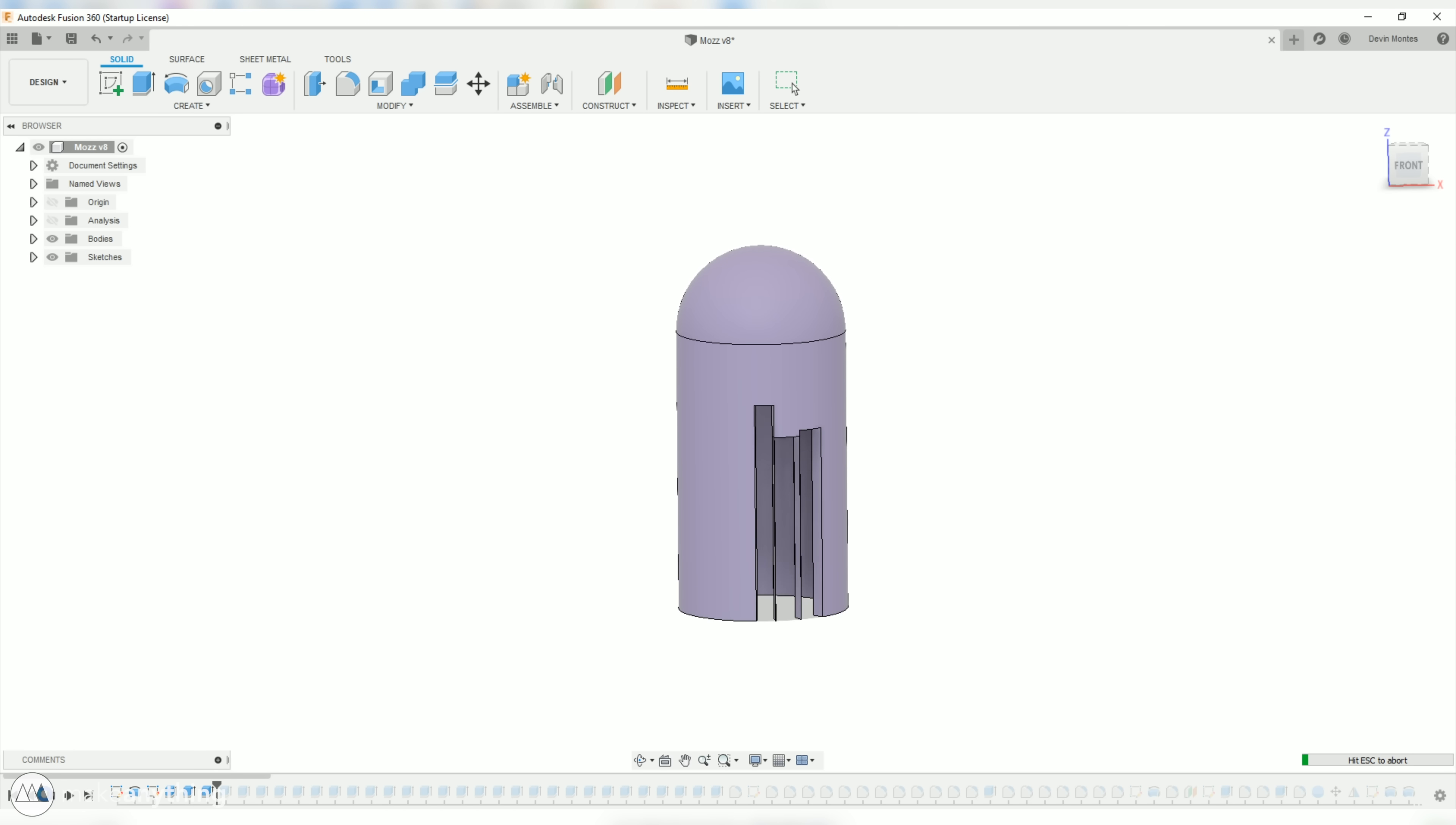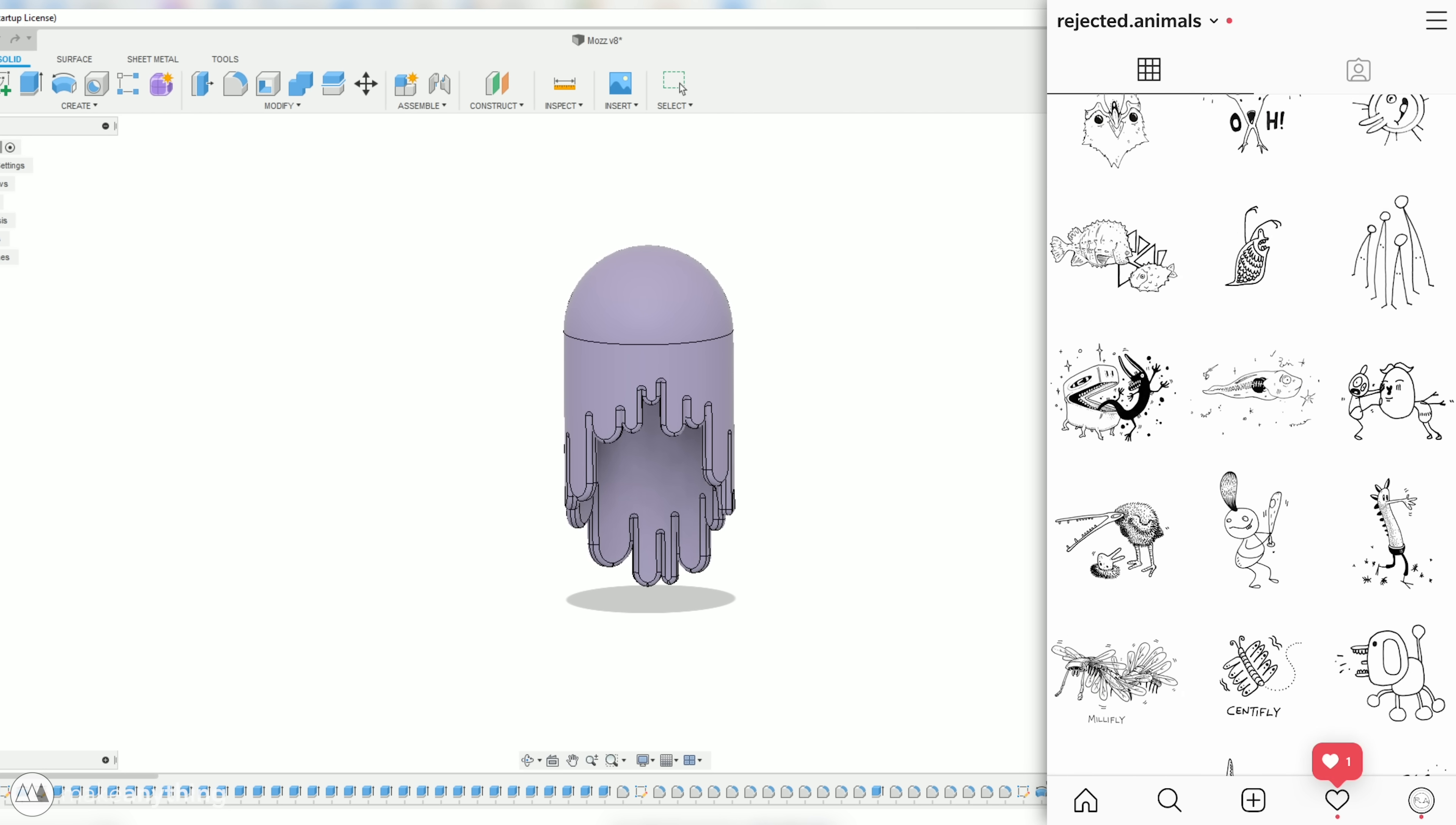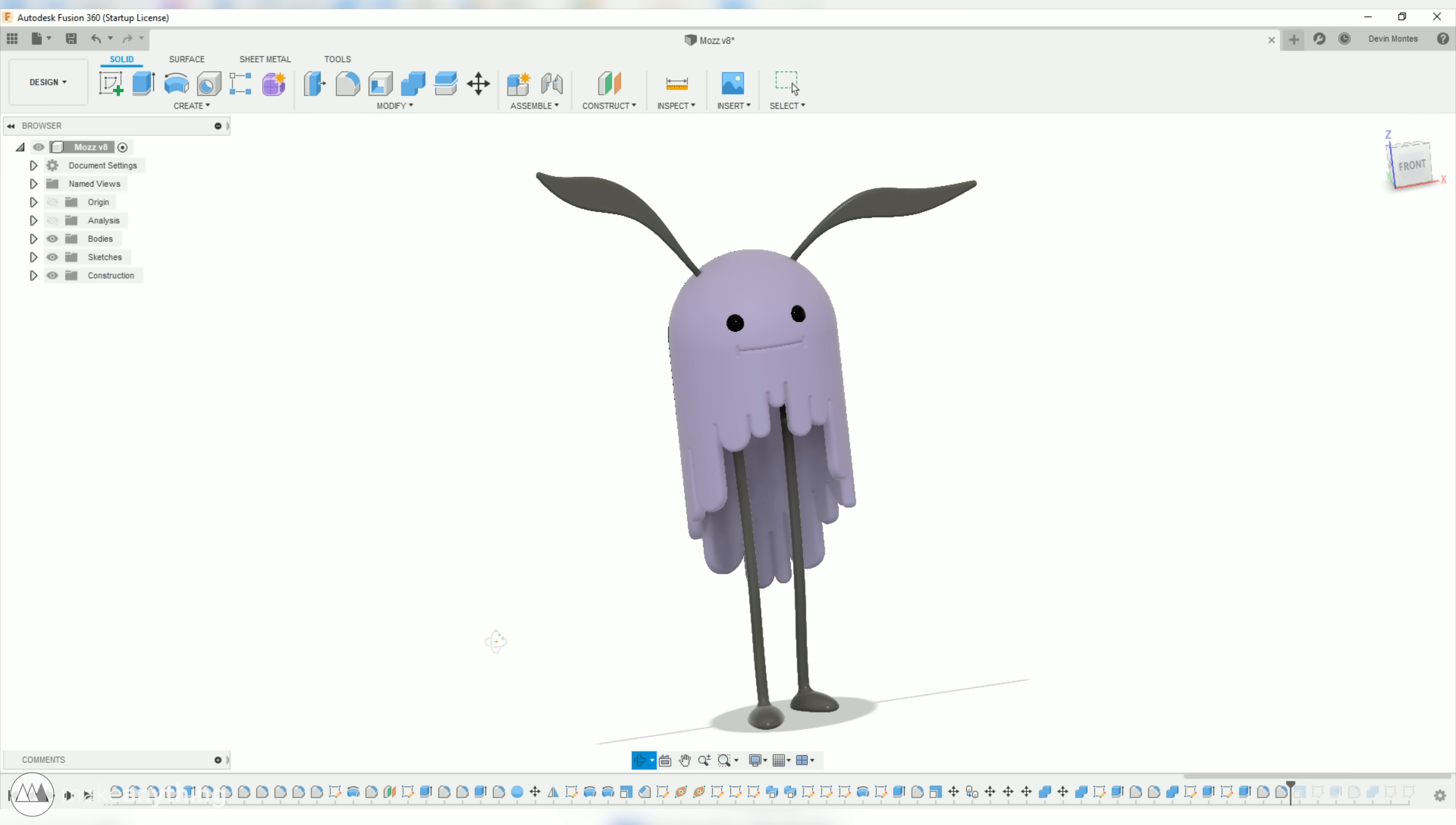Well I decided to go ahead and model out another one of my rejected animals from my Instagram page rejected animals. So I scrolled through all of my daily doodles until I found one that I was especially fond of and more importantly something that I could model in Fusion 360. I ended up selecting our little creature here named Moz. Not to be confused with the name of our printer the Elegoo Mars. Anyways here's how Moz turned out modeled in Fusion 360.